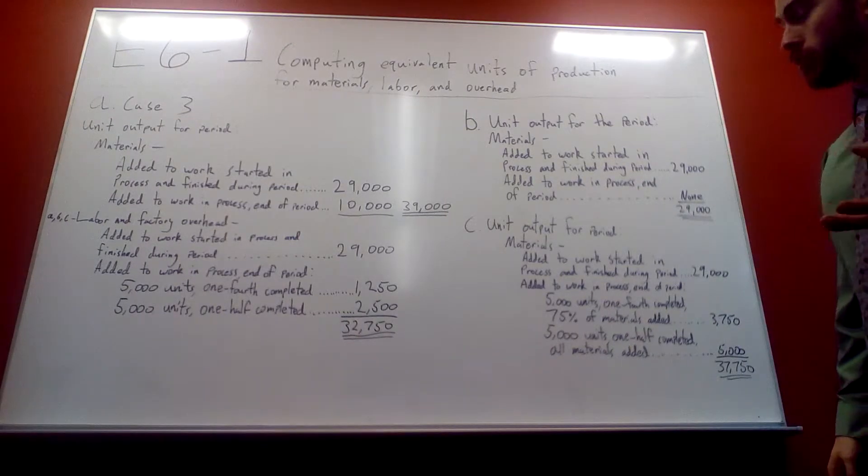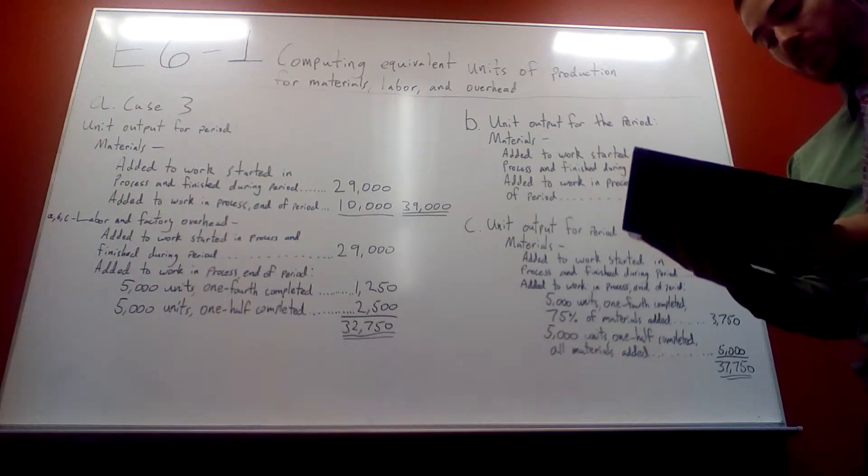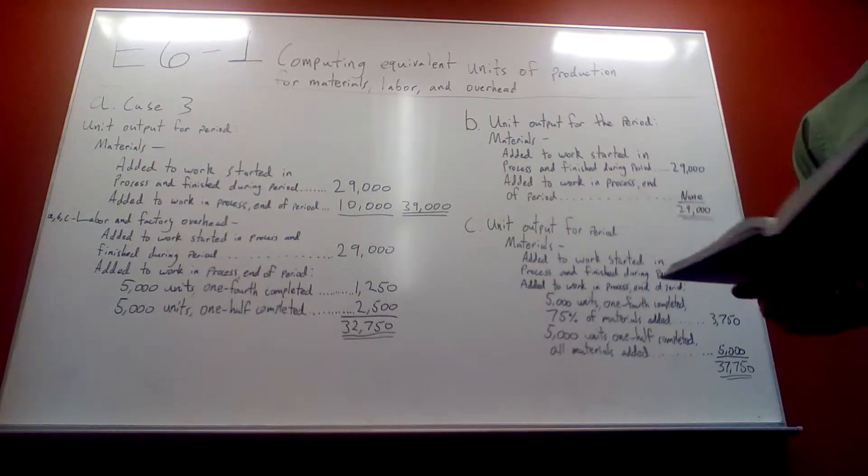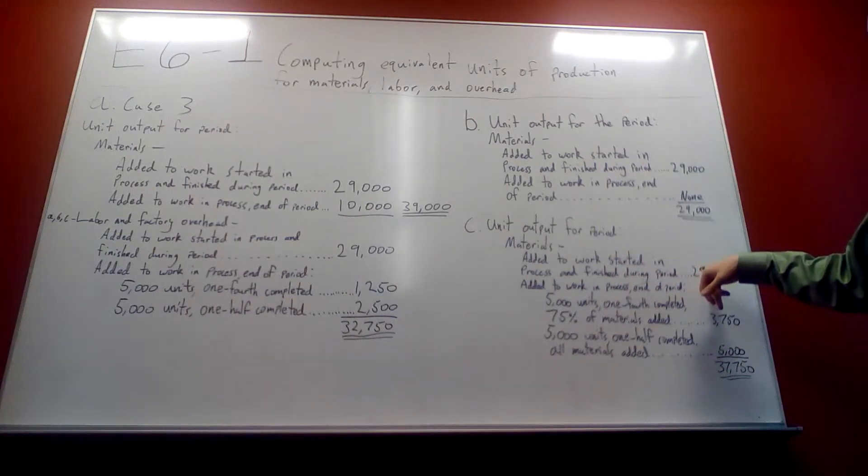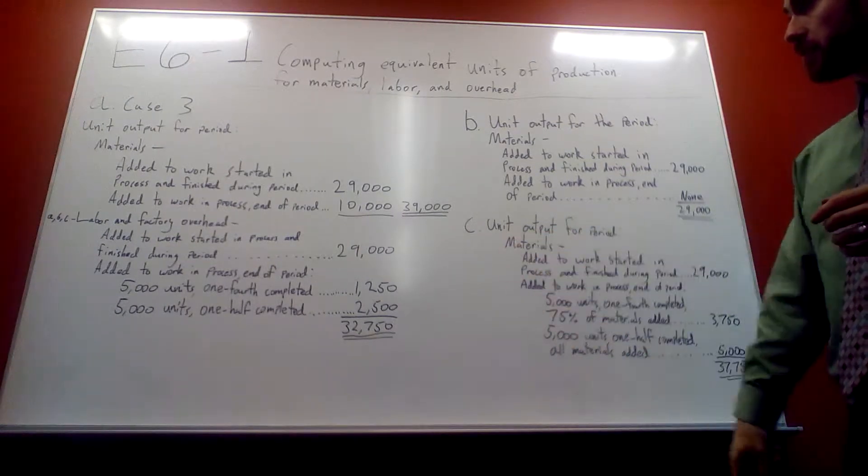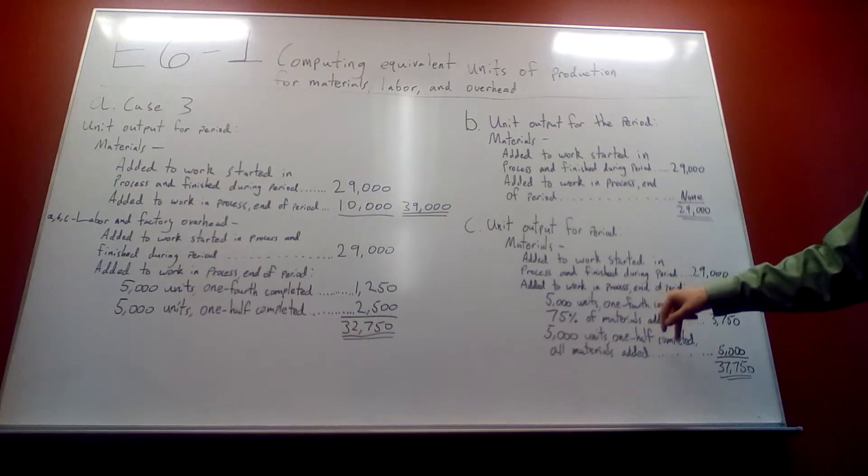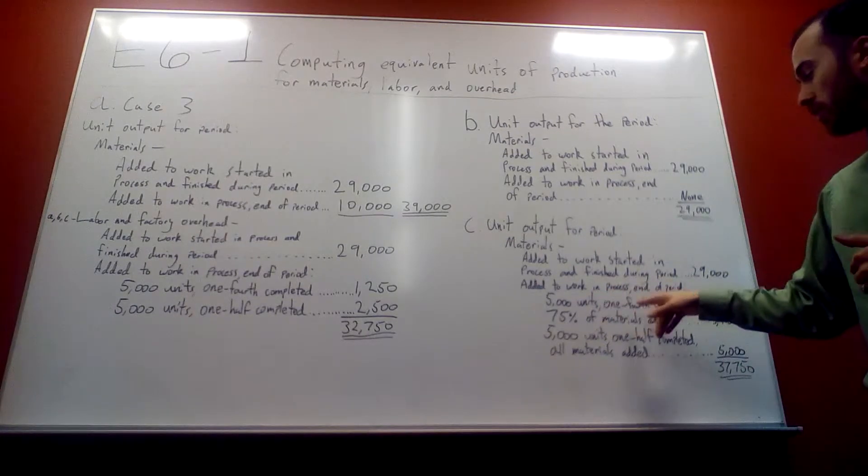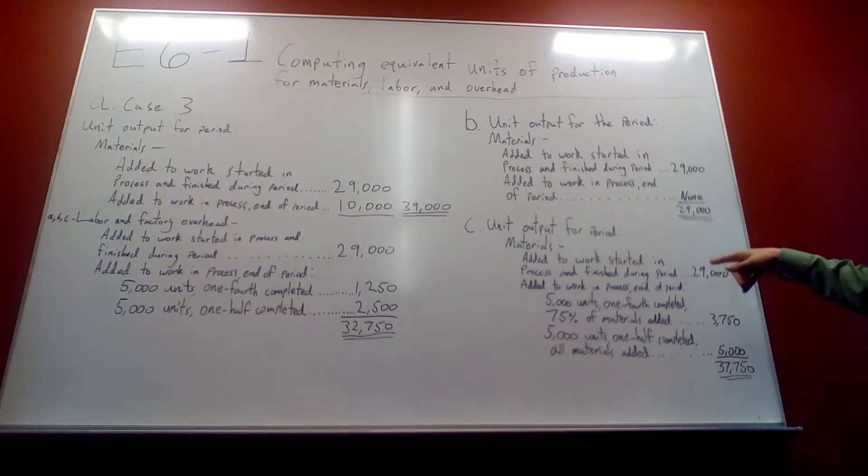And then for C, this one can throw people for a loop. At the beginning of the process, 75% of the materials go into production, and 25% go into production when the process is one half completed. So what we're going to do for this one is, these ones are still 29,000 because they're finished. But those two 5,000s are now going to be a little bit different. Because 75% of materials go in at the beginning, and then the other 25% goes in when it's half completed, this is only one fourth completed. So this is only going to get 75% of the 5,000, which leaves us with 3,750.